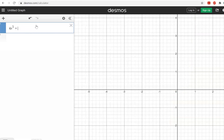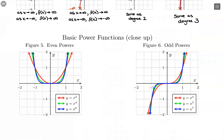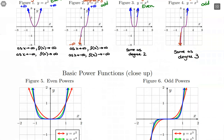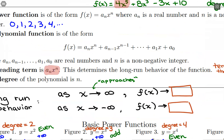If I add a term with x to the sixth — a higher degree — the long-run behavior changes to follow that quadratic pattern, going off to positive infinity on both sides, because the higher degree takes over. The key takeaway is that the leading term, with its numerical coefficient (positive or negative) and its even or odd exponent, determines the long-run behavior of the entire polynomial. Recognizing the leading term tells us the long-run behavior.